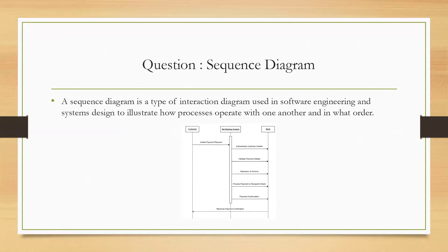Question 4: What is a sequence diagram? A sequence diagram is a type of interaction diagram used in software engineering and systems design to illustrate how processes operate with one another and in what order. You can draw it in MS Visio using the sequence module. Take an example of a customer making a payment through a net banking system and show how the payment process is initiated in MS Visio.